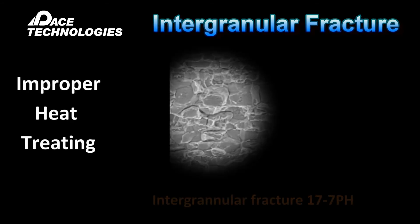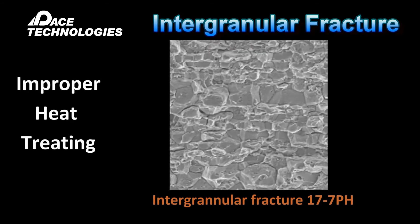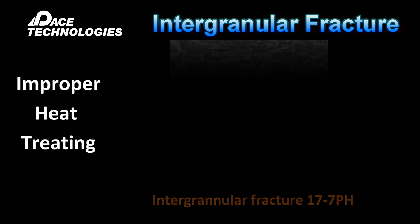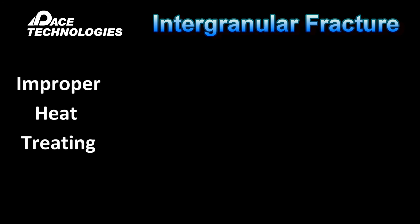Intragranular cracking or fracturing is a fracture that occurs along the grain boundaries of a material. An intragranular fracture can result from improper heat treating, inclusions, or second phase particles located at grain boundaries, and at high cycling loads.